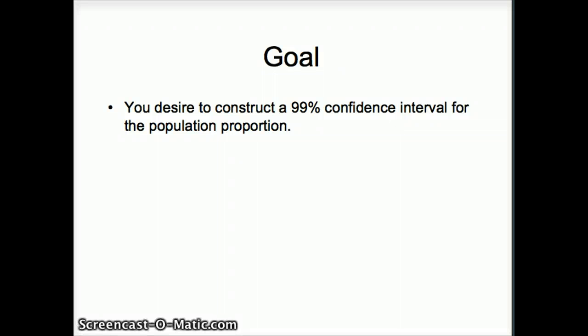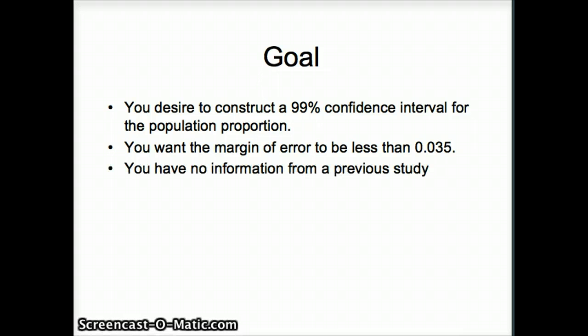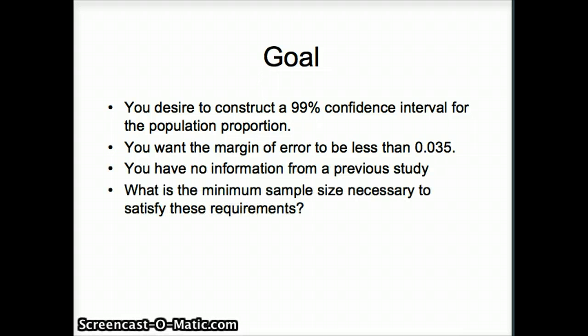Our next goal is to construct a 99% confidence interval for the population proportion. This time we want the margin of error to be less than 0.035. But we have no information, and we want to figure out what the minimum sample size is.